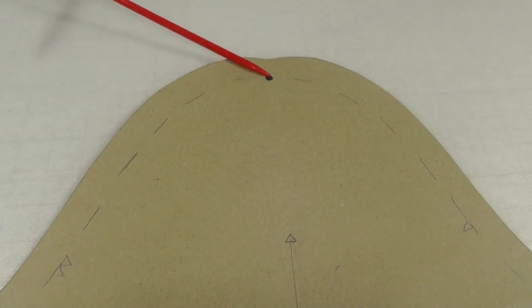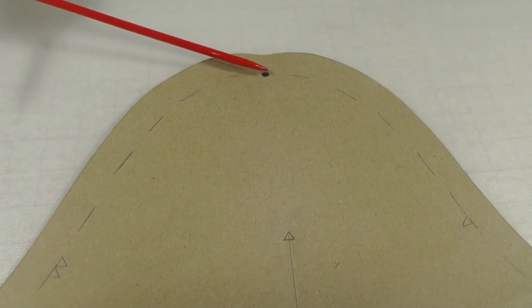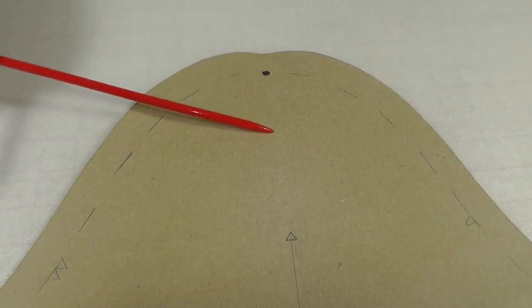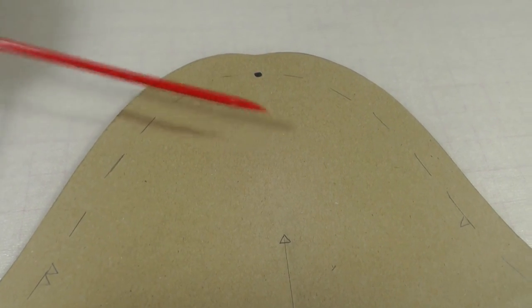From your shoulder point at the seam line you're going to take a measurement roughly about six centimeters which is about two and a half inches down from that point.